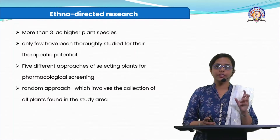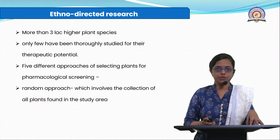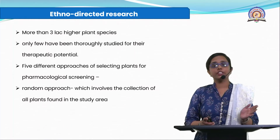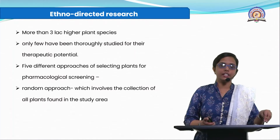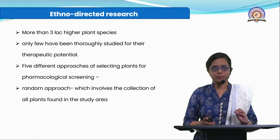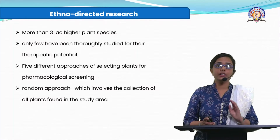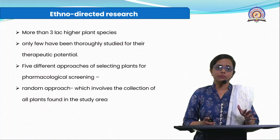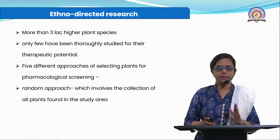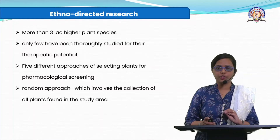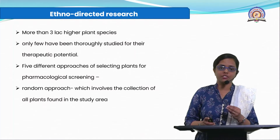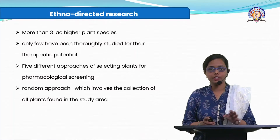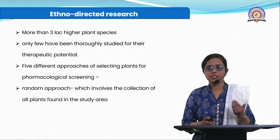Next is ethno-directed research — taking whatever ancient knowledge our elders told us about plant remedies and researching it properly. We have more than 3 lakh higher angiosperm plant species in the world, most having some medicinal activity. We study very few for their therapeutic potential. We can't study all 3 lakh plants, so we select a few using different approaches. We cannot study all active principles or all molecules from every plant, so we need a strategy to select which plants to screen.